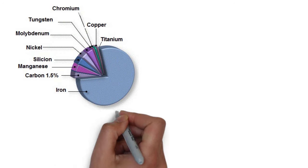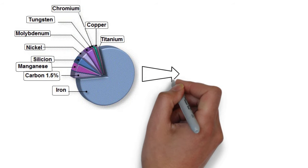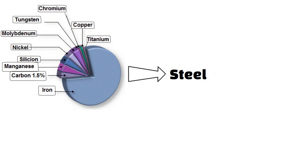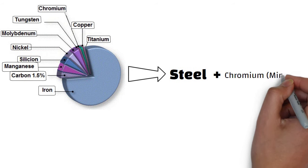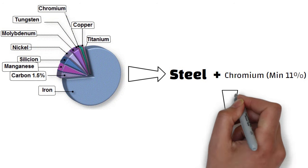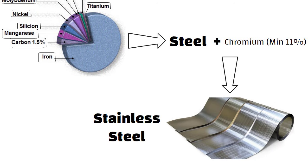Hello friends. When iron is mixed with carbon and other metals, steel is formed. When we add chromium at minimum 11% and other elements to steel, a stainless steel is formed.